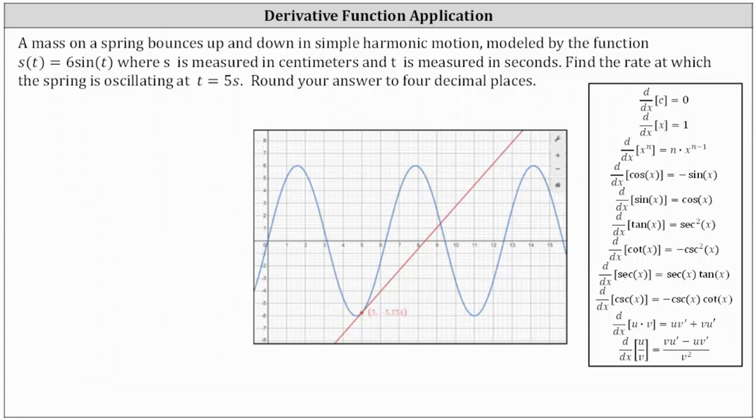A mass on a spring bounces up and down in simple harmonic motion modeled by the function s(t) equals 6sin(t), where s is measured in centimeters and t is measured in seconds. We're asked to find the rate at which the spring is oscillating at t equals 5 seconds and round to four decimal places.